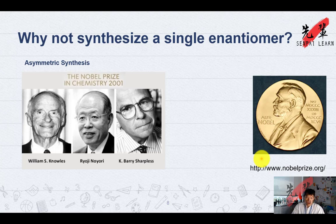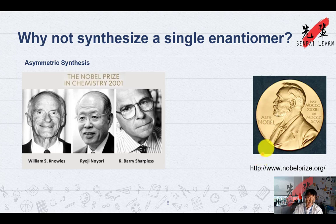People asked: why not make a single enantiomer from scratch? People thought about this, and before the FDA guideline, organic chemists around the world started to develop methods to synthesize a single enantiomer. They call this asymmetric synthesis — asymmetric because it's not symmetrical — in which one enantiomer is produced predominantly over the other.